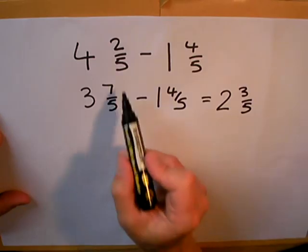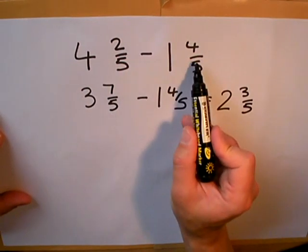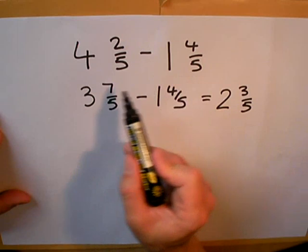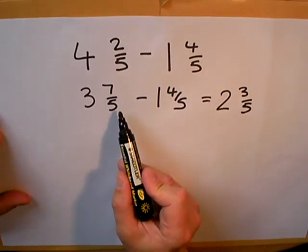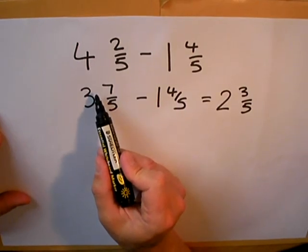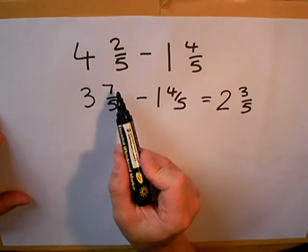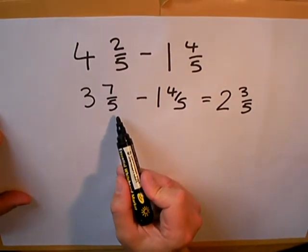Remember, if you see a fraction where you don't have enough fractional parts to take away, then change one of your whole ones into some more extra parts. Here I took one whole one and made it into an extra five fifths. So my two fifths were changed into seven fifths.